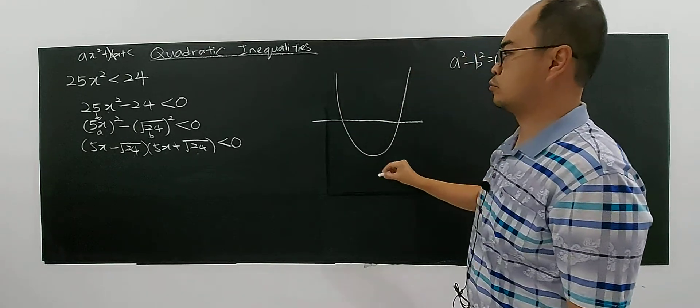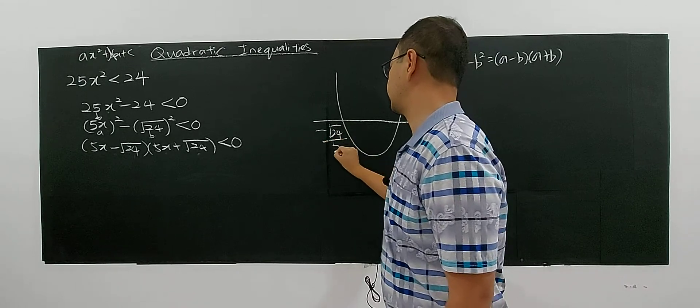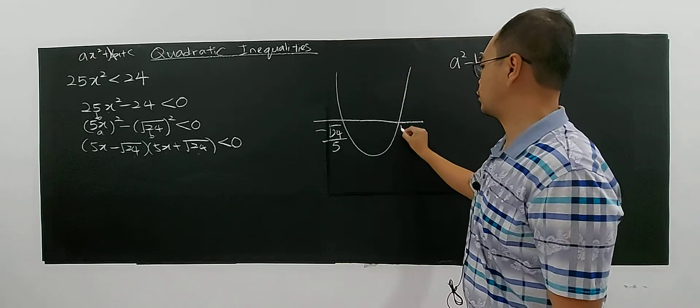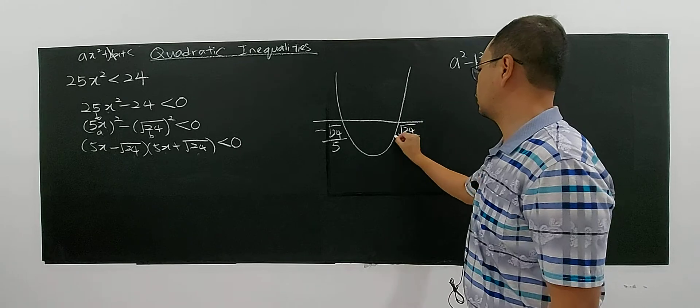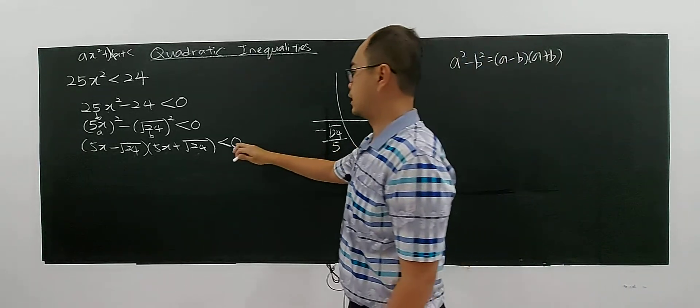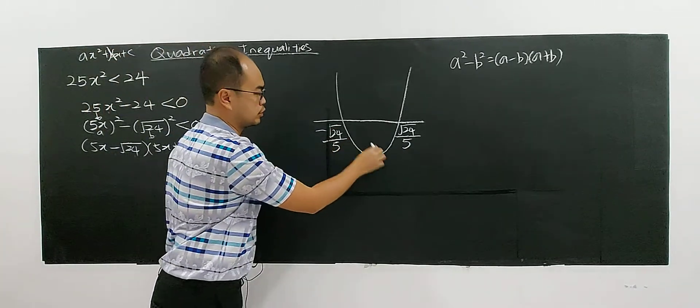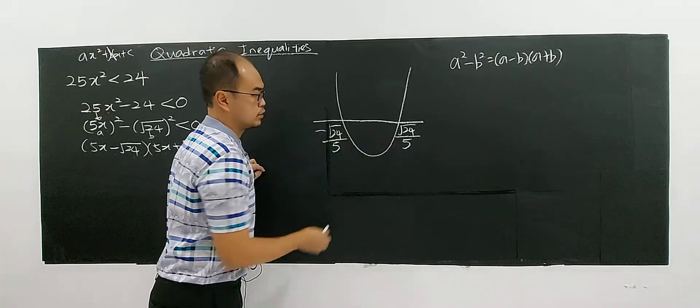So you have one value to be negative square root of 24 over 5. And the other one will be square root of 24 over 5. So because this is less than, so we will choose the region here. This region here.